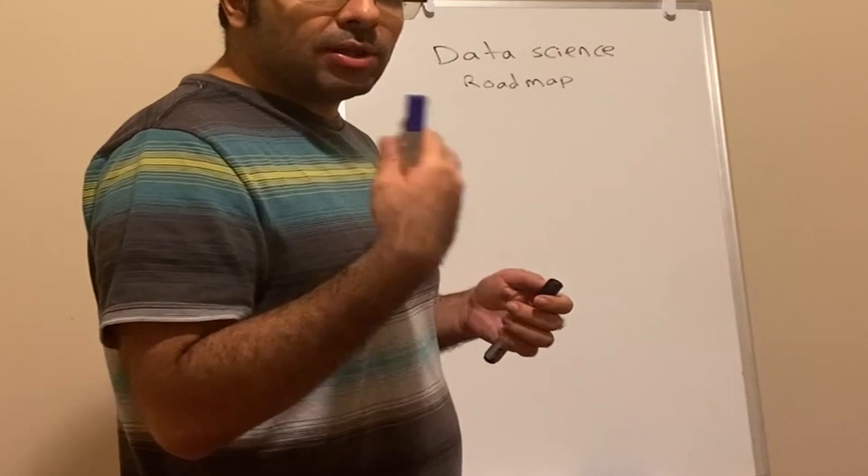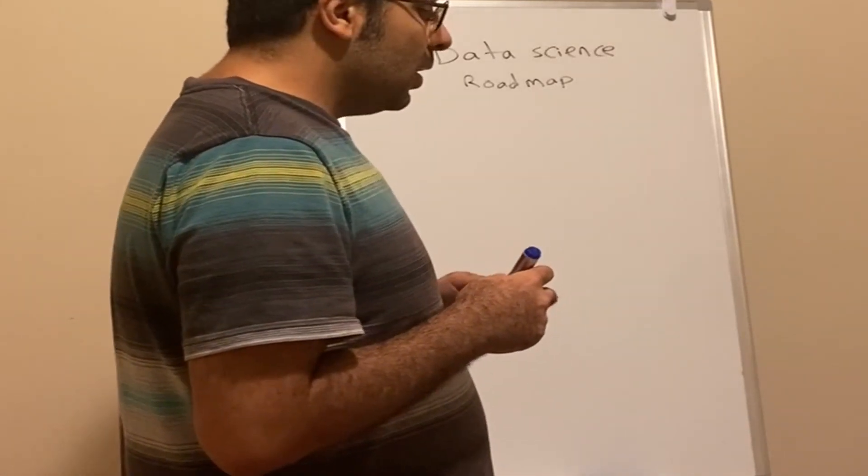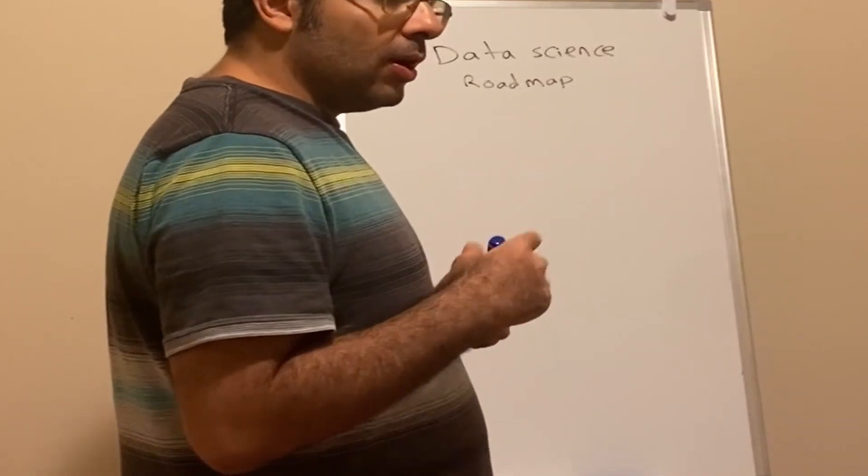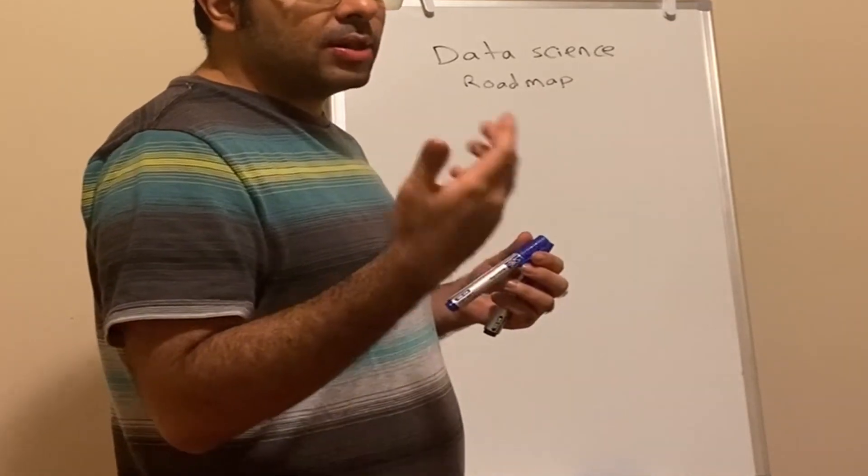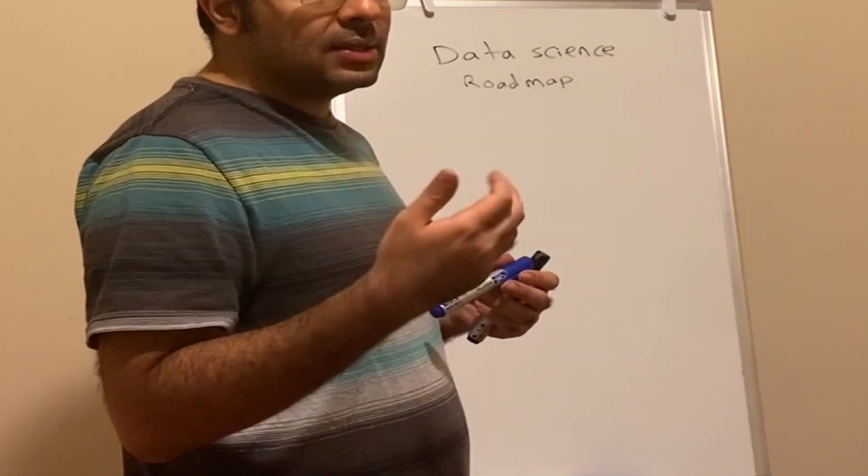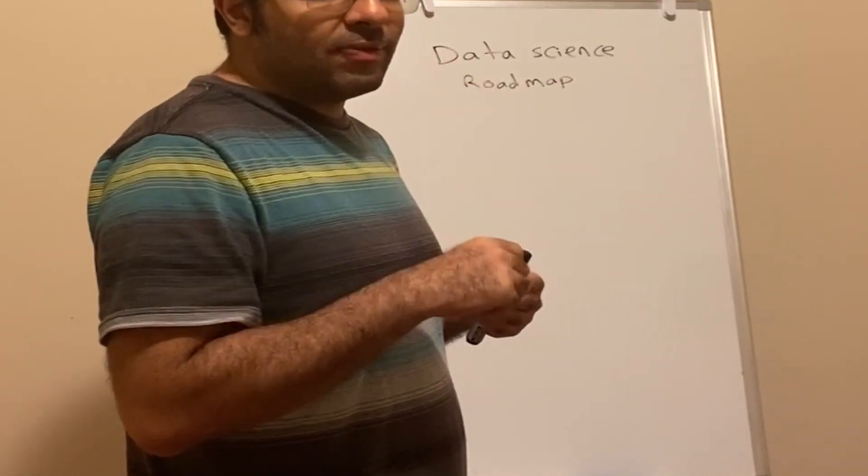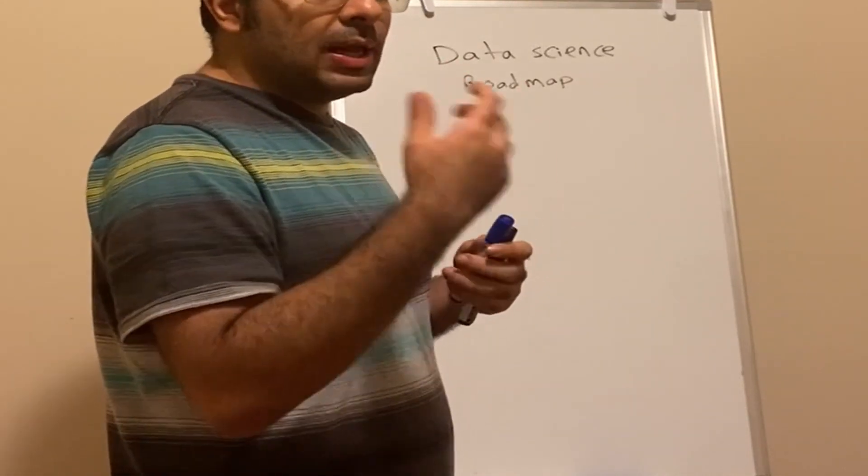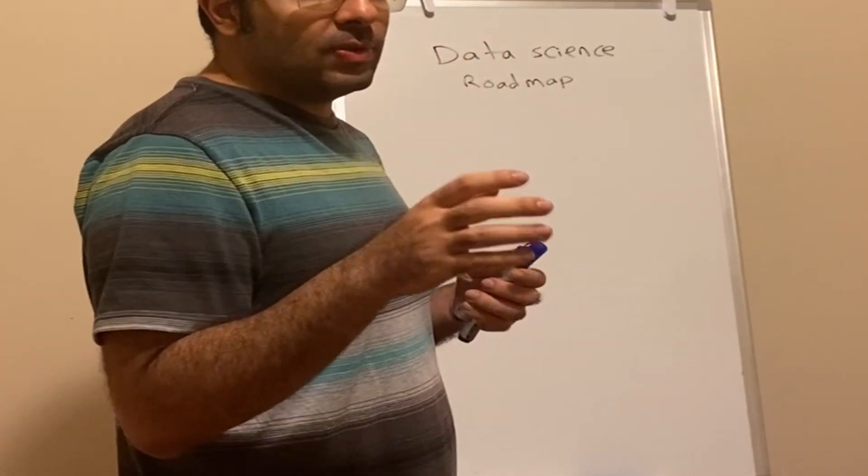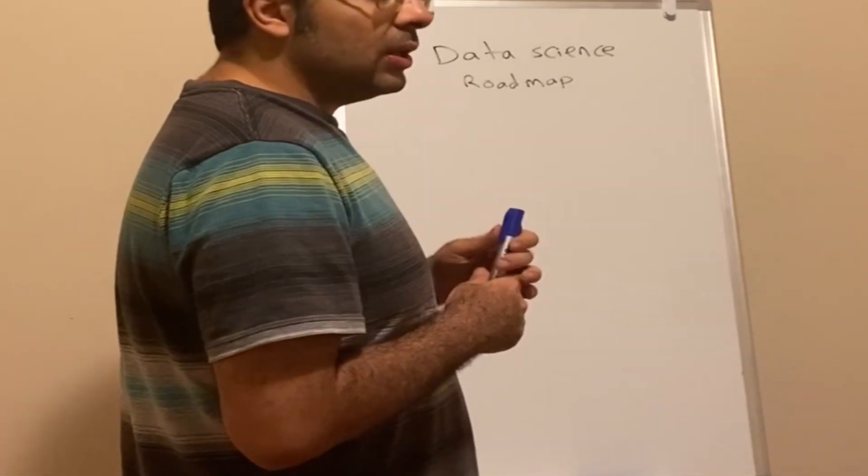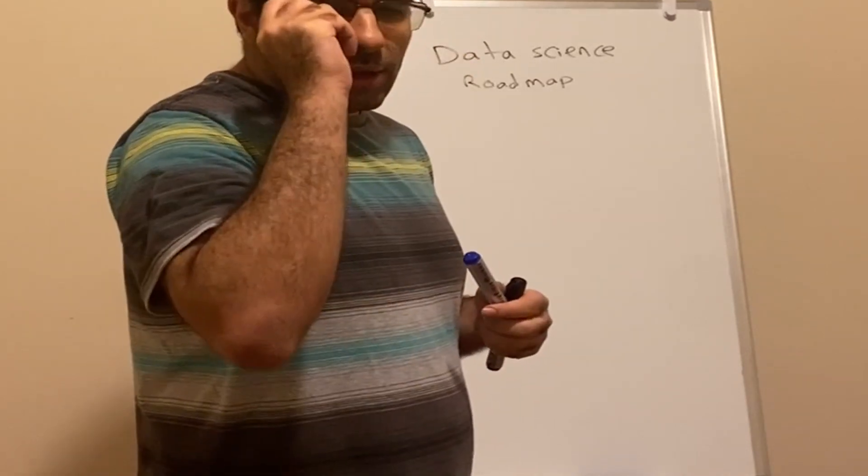To learn data science correctly and efficiently, step number one is that we need to be familiar with the basic concepts of math and statistics. I posted a short video explaining what concepts you must know and what's optional, but that was very short. Now I want to talk about each piece in detail.